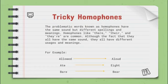The problematic words known as homophones have the same sound but different spellings and meanings. Homophones like there, their, and they're are common. Although they all have the same sound, they all have different usages and meanings.